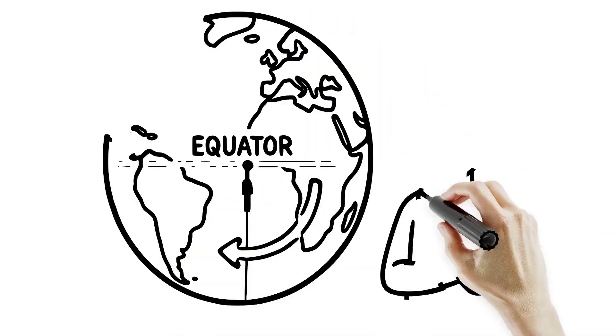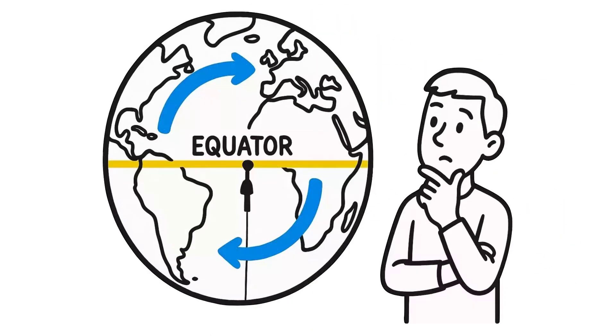Imagine standing at the equator, watching clouds swirl in opposite directions on each side of the globe. Why do storms spin one way in the north and the other in the south?